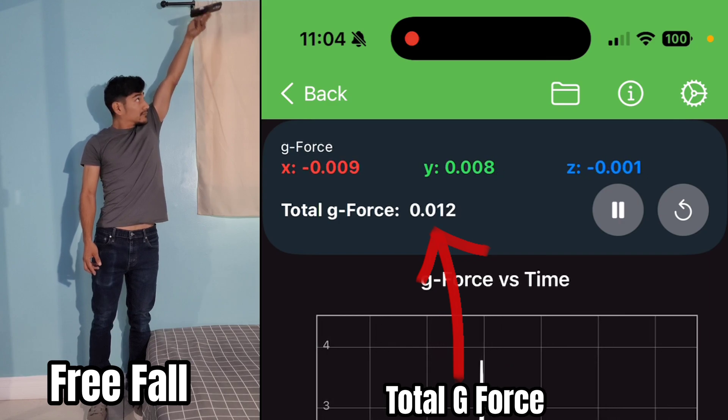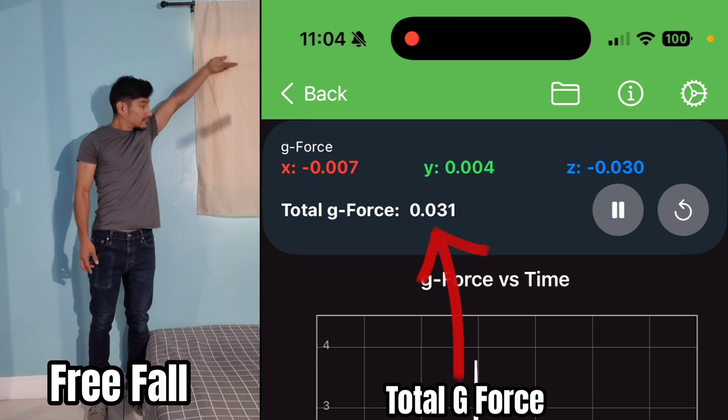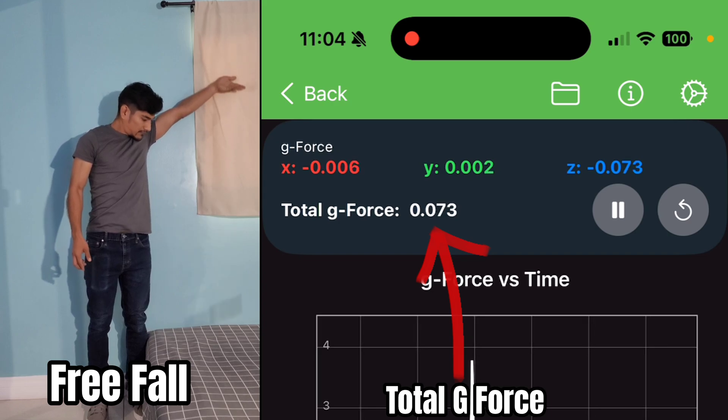If the accelerometer was accelerating down in freefall, it would detect that acceleration by increasing from 1g, not decreasing.